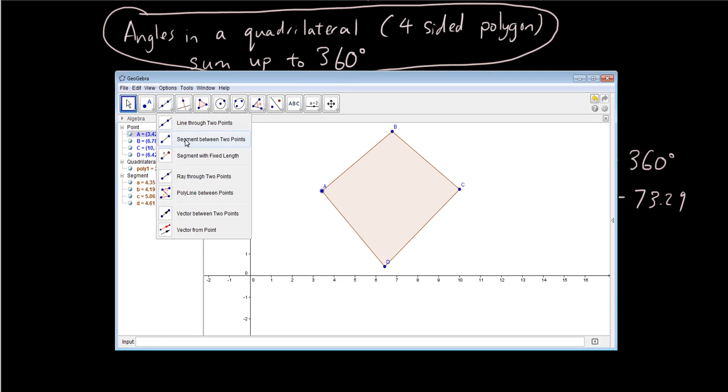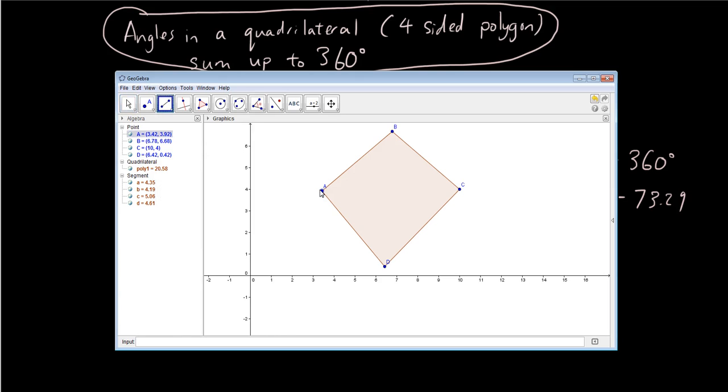And what I'm going to do is I'm going to use the line tool here, and I'm going to create a new line by choosing the second line button that says segment between two points. And I'm just going to link up two points so that I separate this shape into half. So now what I have is a quadrilateral.